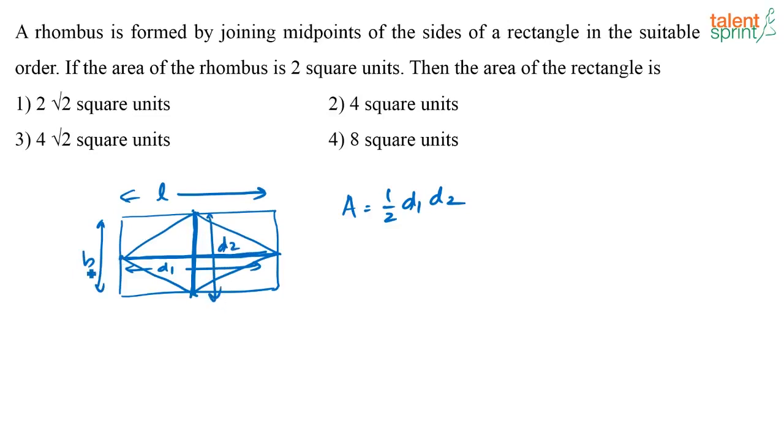So as I said, this d2 is equal to b and d1 is equal to l. So what is the area of the rhombus? It is half d1 d2 which is equal to 2 or I can say d1 into d2 is equal to 4 where I know d1 is l and d2 is b. So I can see l into b is 4 that is the area of the rectangle is 4 square units.